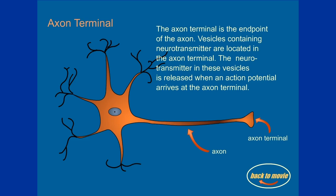Axon terminal. The axon terminal is the endpoint of the axon. Vesicles containing neurotransmitter are located in the axon terminal. The neurotransmitter in these vesicles is released when an action potential arrives at the axon terminal.